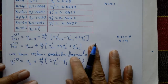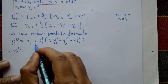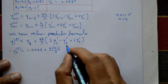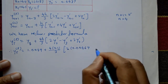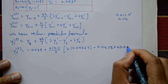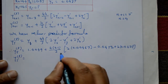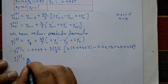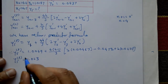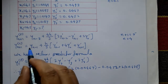Substituting the values: y5_p = y1 + (4 × 0.1 / 3) × (2 × 0.0467 - 0.0452 + 2 × 0.0437). Using a calculator, y5_p = 1.023. This is the predicted y5 value from the predictor formula. Next, we apply the corrector formula.